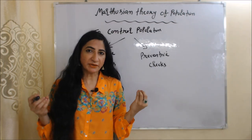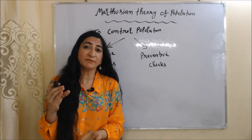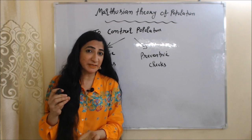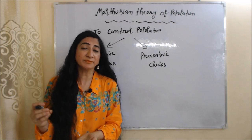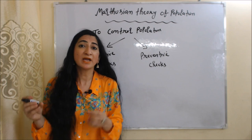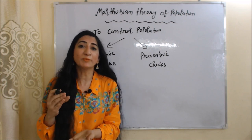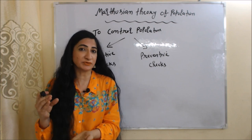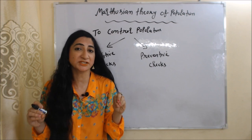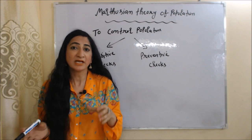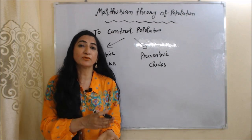If in a country population is growing very fast but food supply is growing very slowly, it will create a very complicated situation in the economy. That is why population must be controlled so that it can balance with food supply.